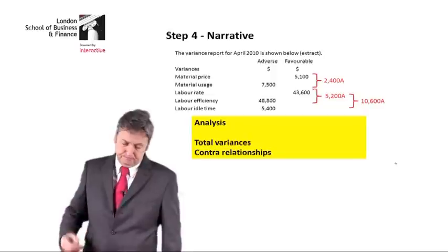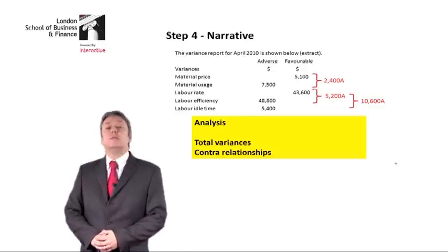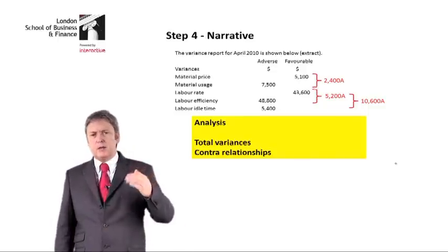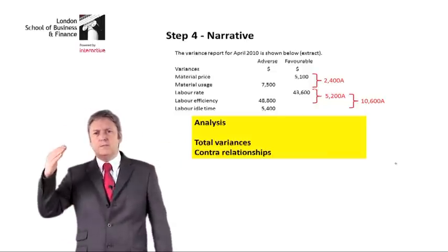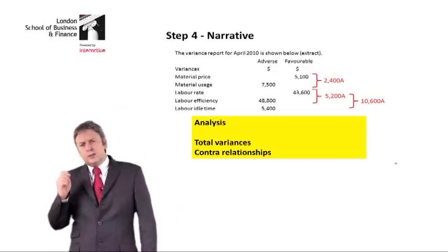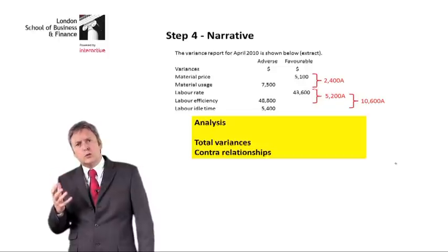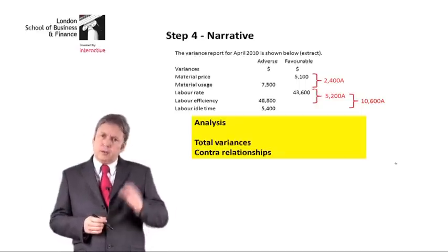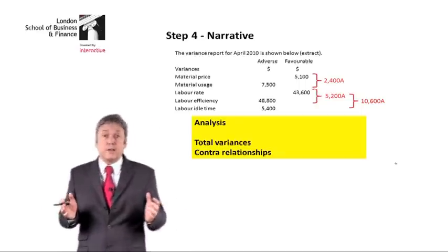Let's move on. The next part of the narrative gives us a box of data — in fact, five variances. Looking at these variances, we're given individual variances for materials: price and usage; and labour: rate, efficiency, and idle time. What most examiners want to look at is the overall total implication. So I've tried to group the material variances together and the labour variances together, and we'll discuss those.